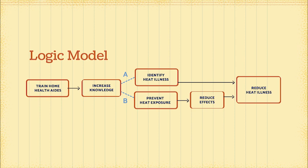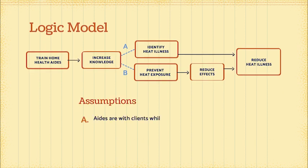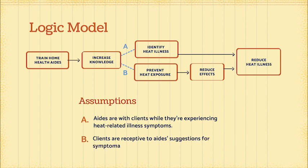A logic model appears with five columns: train home health aids, increase knowledge, then dashed lines A and B pointing to 'identify heat illness' and 'prevent heat exposure.' Arrows from those boxes point to 'reduce heat illness.' To further capture the discussion, Jackson adds notes making their assumptions explicit at the bottom of the final logic model. Clearly noting this information will help the group decide on an appropriate set of standards and indicators later in the evaluation process.